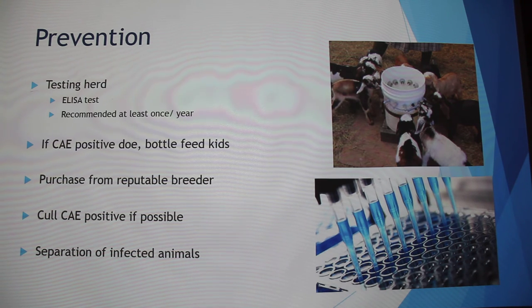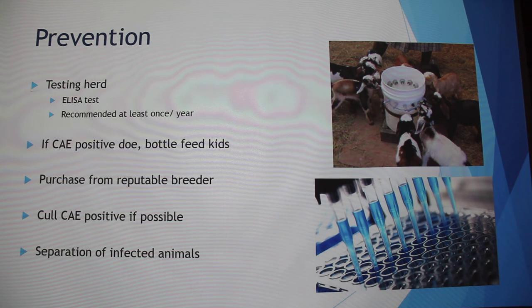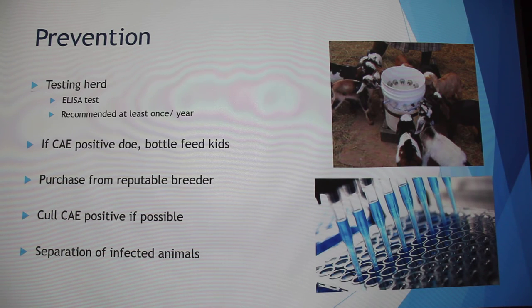If you have a CAE-positive doe that's a really good doe and you don't want to get rid of her, it's important that when she kids, you take the baby and bottle feed — don't let it nurse from her. It's also important to purchase from a reputable breeder. When I bought my two does, the breeder stressed that they were a CAE-negative herd. If you're not emotionally attached, it's good to practice culling in your herd so you can become a CAE-negative herd. It's also good to keep infected animals separate so you don't spread the disease.